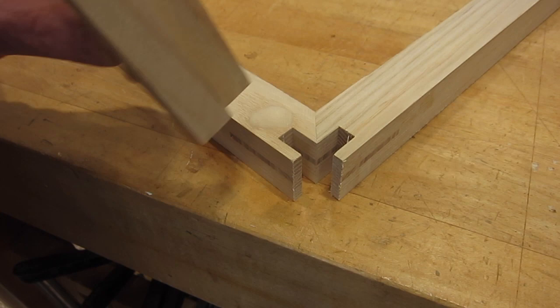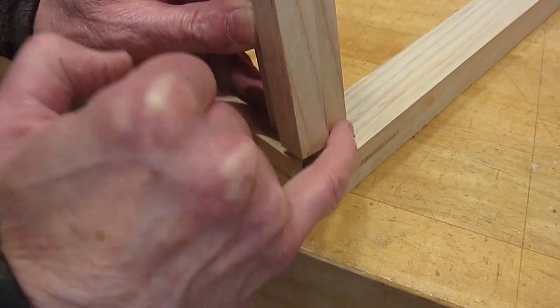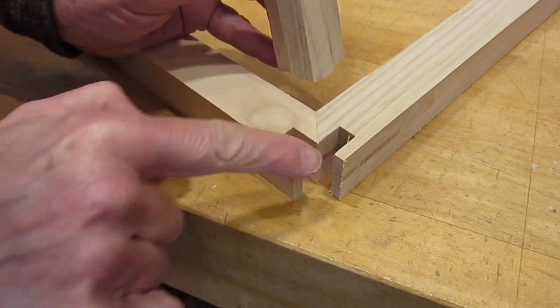So there we are cut out and you can see that you got long grain against long grain here. So that'll be strong as well as here, here and here. So four surfaces.